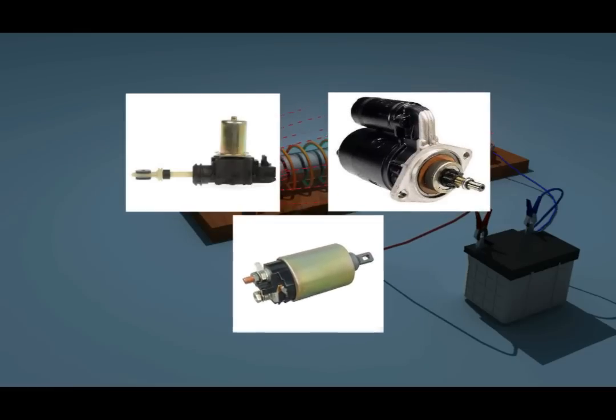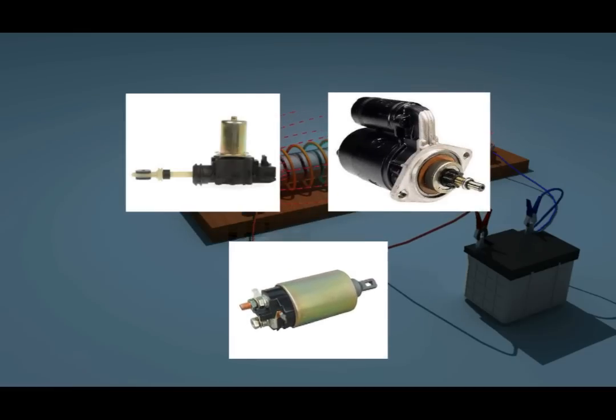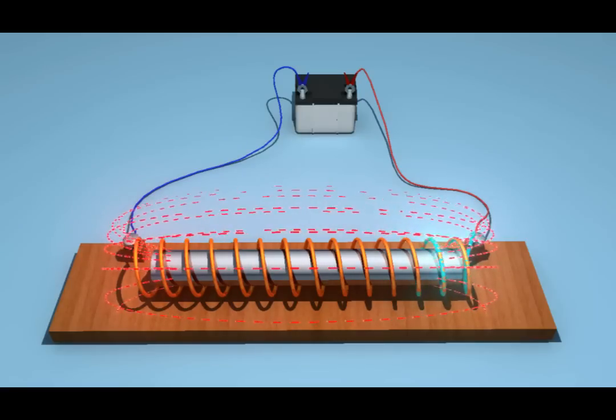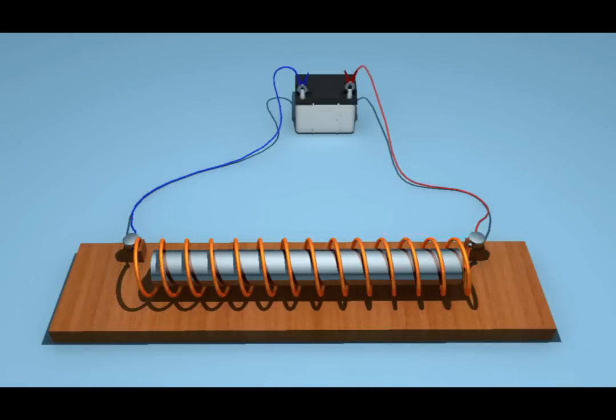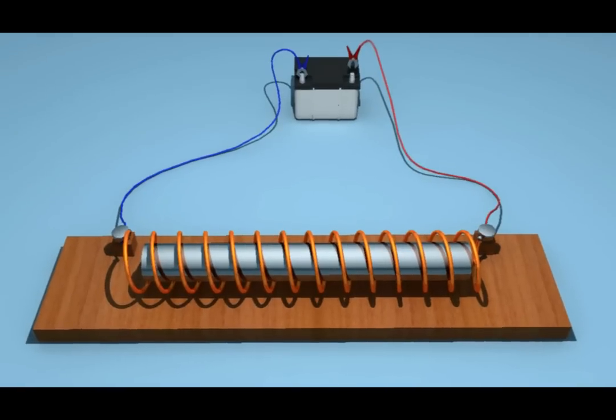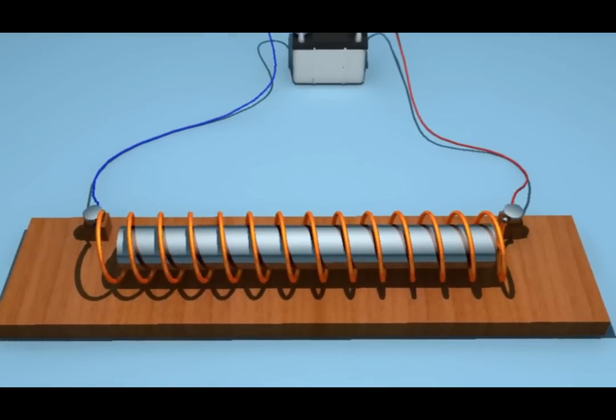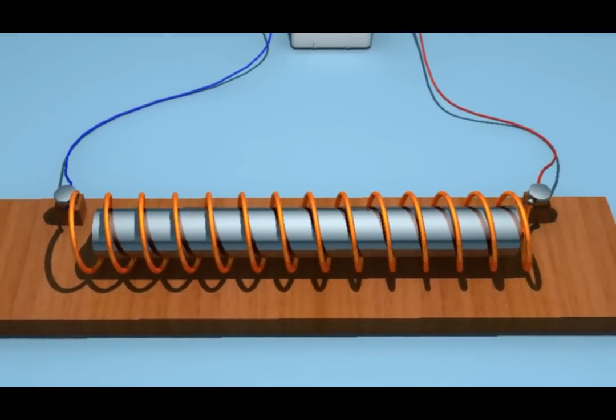The current-carrying solenoid converts the soft iron into an electromagnet. When the current is stopped, the solenoid is demagnetized. Even the soft iron core also loses its magnetism.